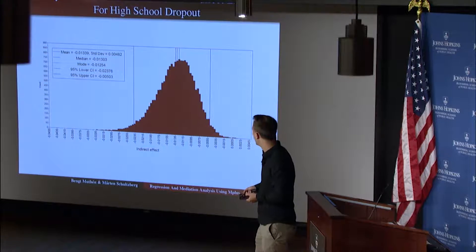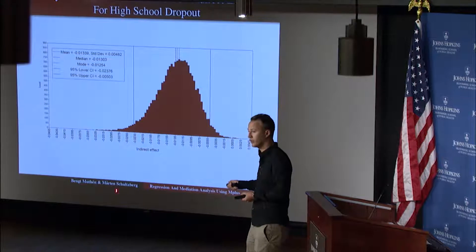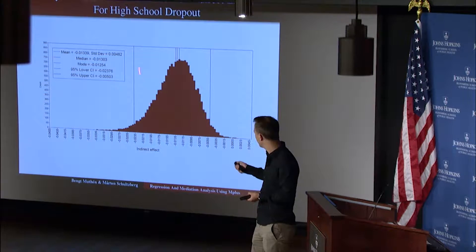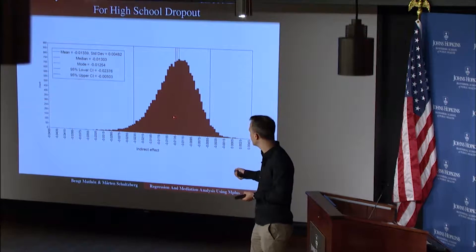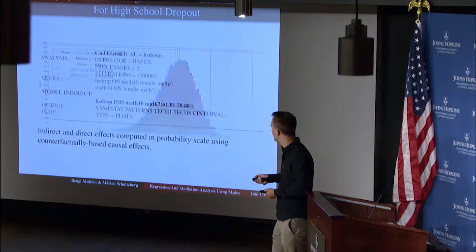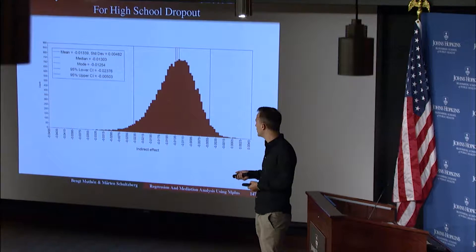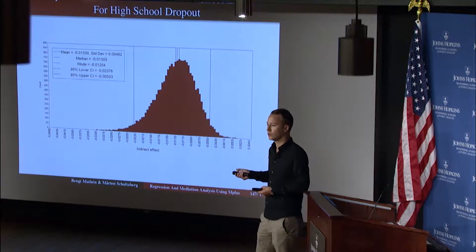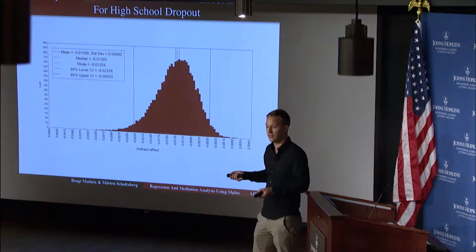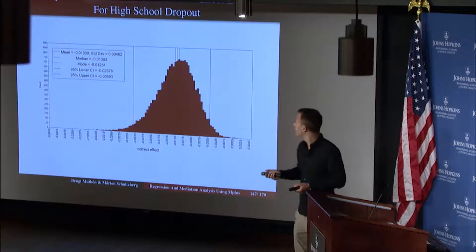Here is the posterior distribution. We get a posterior distribution for the indirect effect, and you can see it has a non-symmetrical confidence interval — somewhat skewed. The mean estimate is 0.01. This is on the probability scale: if math7 shifts one standard deviation, then the probability of high school dropout via the shift in math10 due to the exposure shift is only around 1%. The mean and median are pretty close to each other.